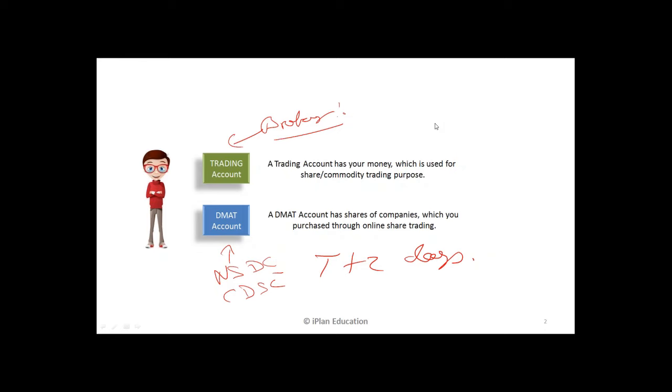You keep that money there to buy and sell everyday the shares. And in DMAT account you buy company, pay money and the shares are being transferred in electronic format. Now in old days we used to receive printed shares but nowadays the shares are kept in DMAT account. So like in bank account you have money, in DMAT account you have shares.